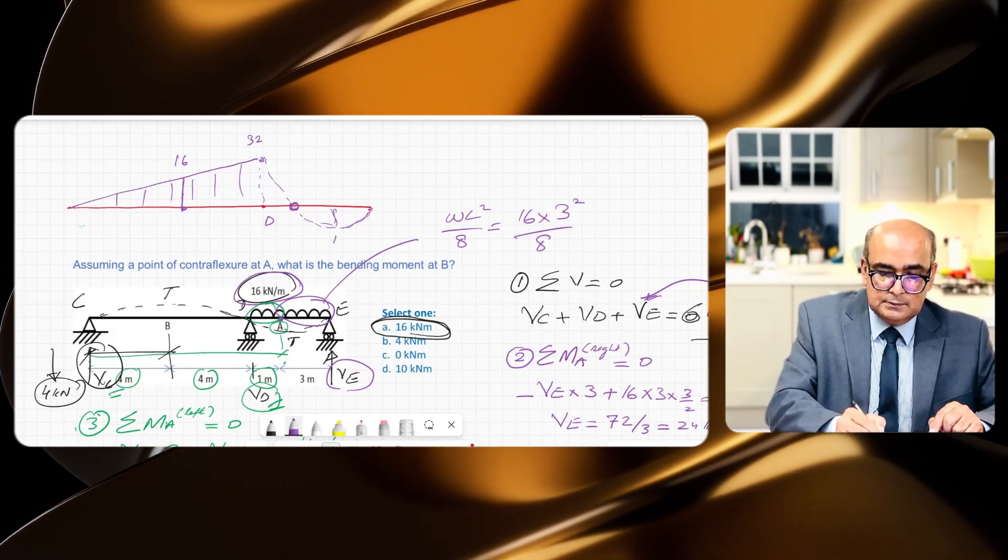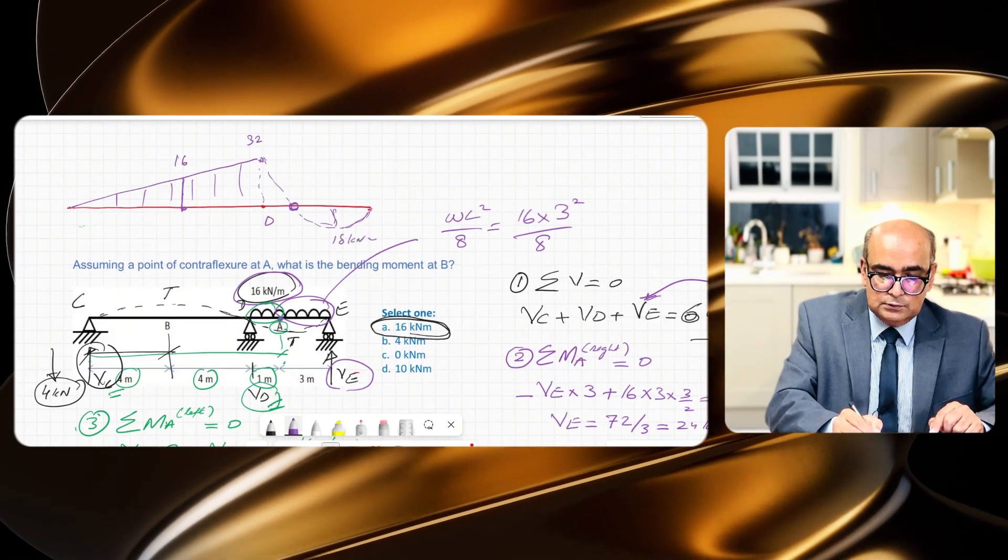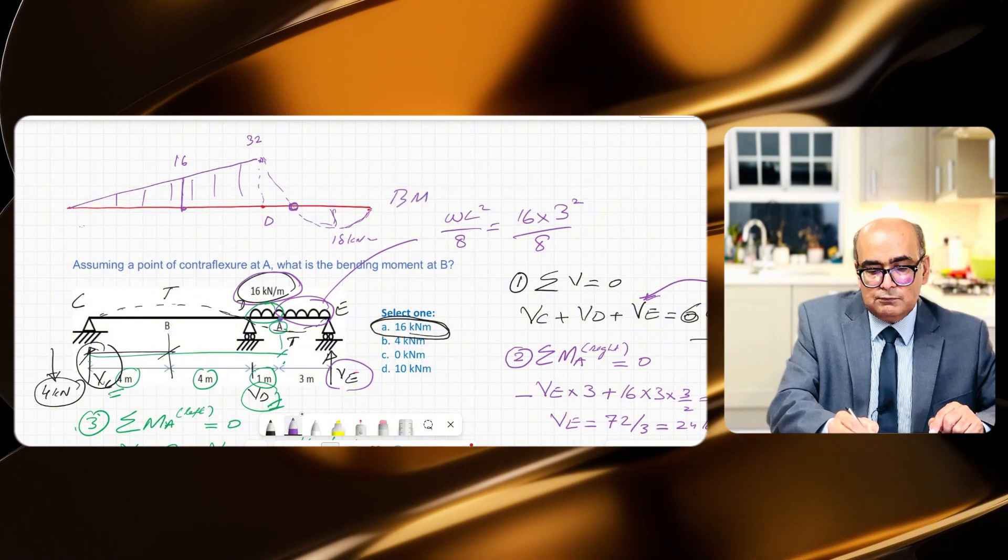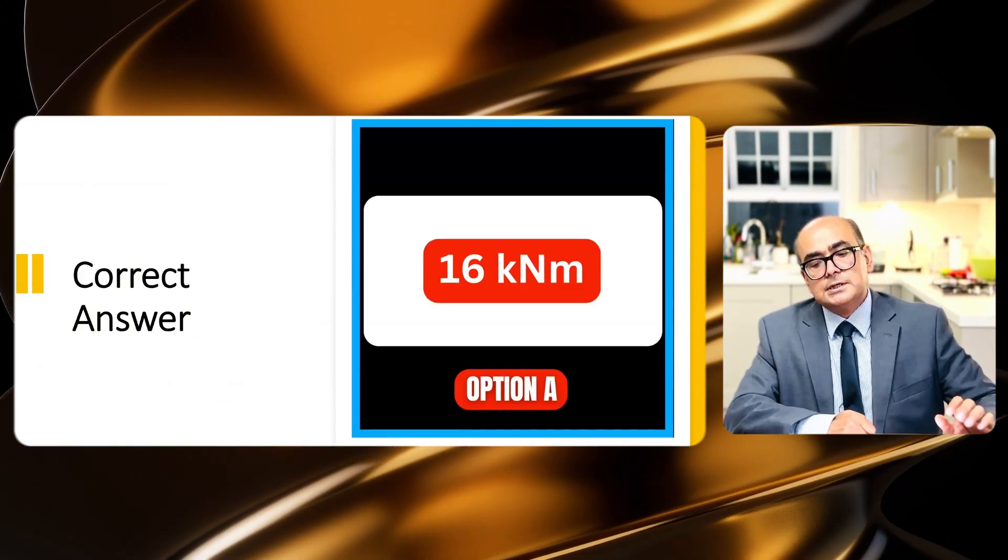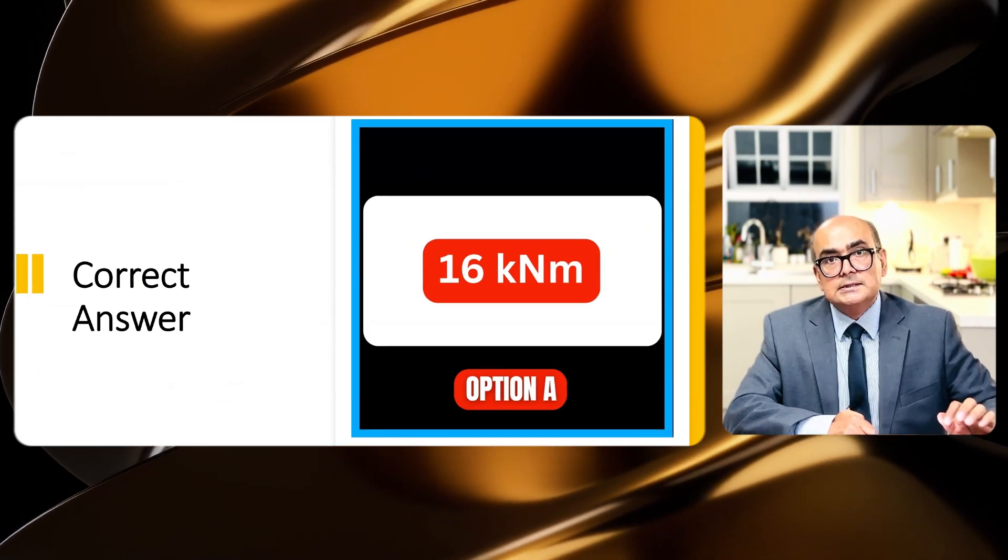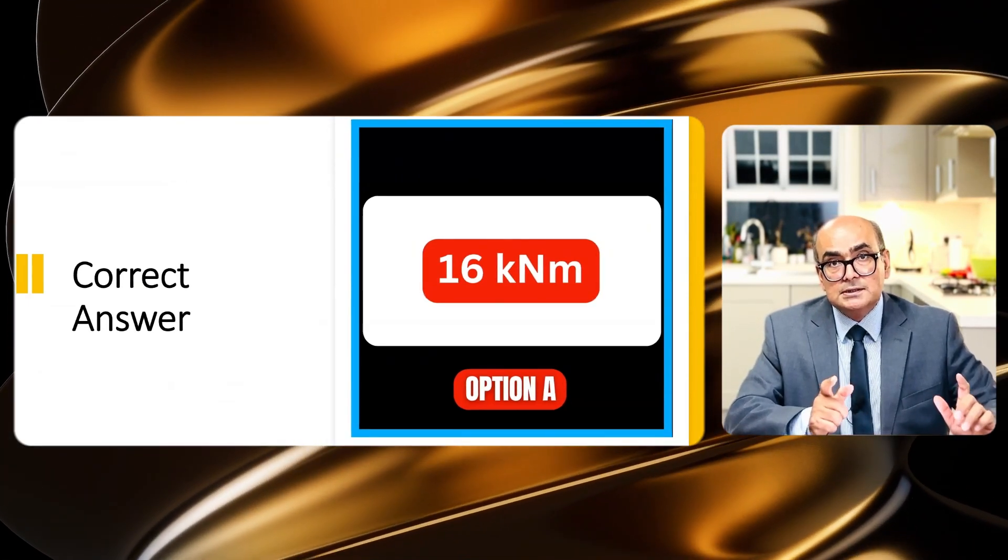So this is our final BMD. So the correct option is option A, 16 kilonewton meters. Did you get it right?